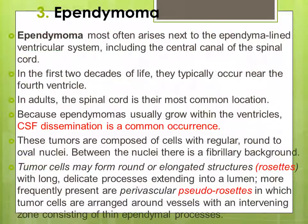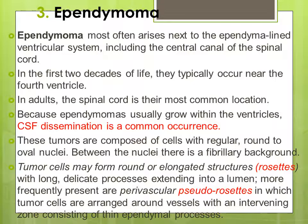Ependymoma most often arises next to the ependymal lining of the ventricular system, including the central canal of the spinal cord. In the first decade of life it predominantly occurs in the fourth ventricle; in adults it is more prominent in the spinal cord. Because ependymoma usually grows within the ventricle, CSF dissemination is common. The tumor cells are rounded, oval, or elongated with regular nuclei and a fibrillary background. Tumor cells may form perivascular pseudorosettes — arranged around blood vessels with an intervening zone of ependymoma cell processes.